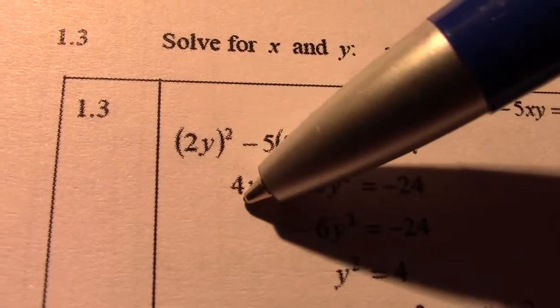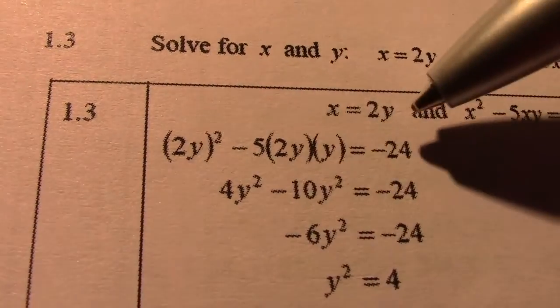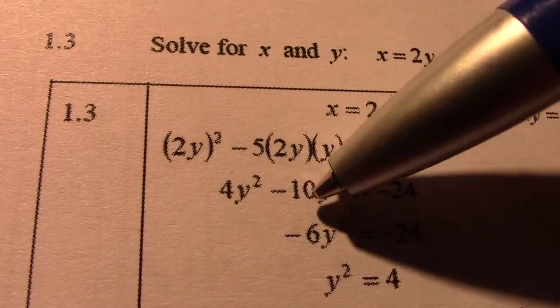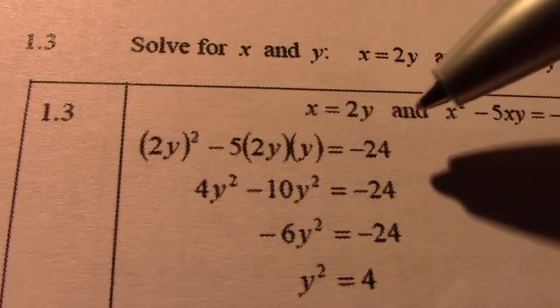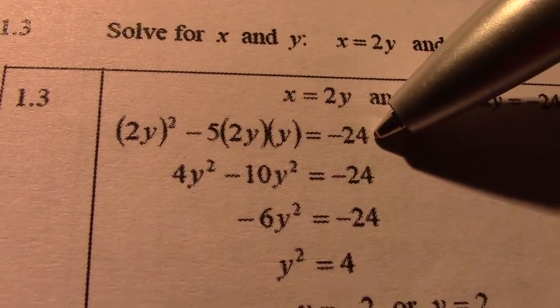So 2 times 2, 4. y times y, y squared. Negative 5 times 2 gives me negative 10. y times y gives me y squared equal negative 24. 4y squared minus 10y squared gives me minus 6y squared equal negative 24.